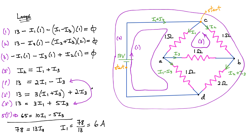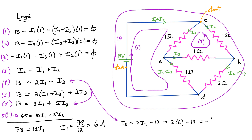Now that I have I1, I substitute back into equation one prime: 13 = 2(6) - I3, so I3 = 12 - 13 = -1 ampere. Then from equation three prime: I2 = I1 + I3 = 6 + (-1) = 5 amperes.